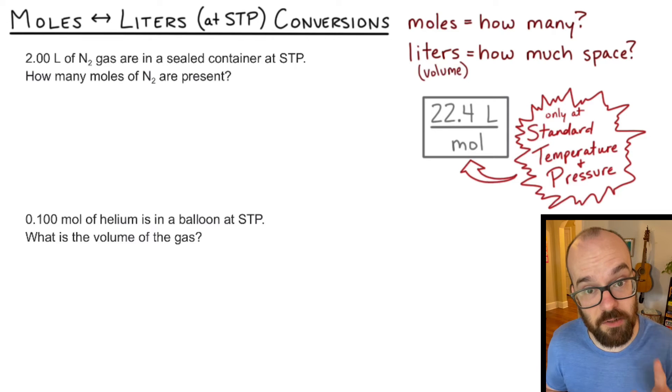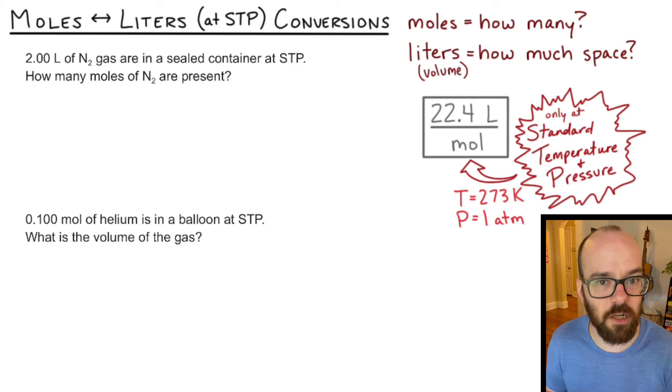If it's not at STP, we need to use the ideal gas law. And one mole of that gas won't take up 22.4 liters, it'll take up some larger or smaller volume. So what is STP specifically? Well, STP is going to be a temperature of 273 Kelvin, which is zero degrees Celsius or 32 degrees Fahrenheit. So pretty cold temperature. And the pressure is going to be one atmosphere of pressure, which is about the pressure at sea level here on earth.